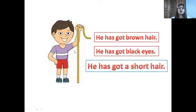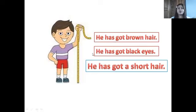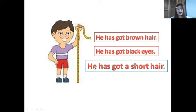How about this boy? Look at the boy. What color is his hair? He has got brown hair. What color are his eyes? He has got black eyes. He has got short hair.